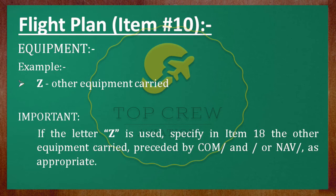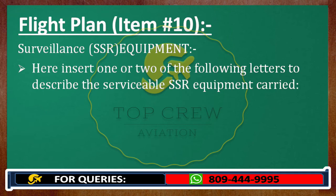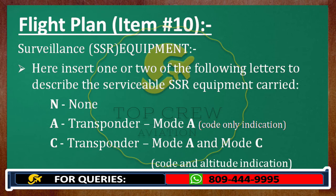Zulu is mentioned if we have something new which is not covered under the ICAO list. The next is surveillance equipment, that is SSR, which we mention after the oblique stroke. Insert one or two of the following letters to describe the serviceable SSR: N when there is no transponder; A for transponder Mode A, that is code only indication; C for transponder Mode A and Mode C, that is code and altitude indication.